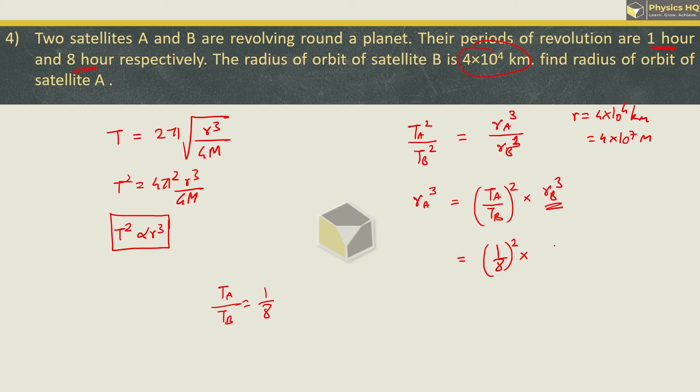Let us put it over here into radius of B is given as 4 into 10^4 km. So this becomes (1/8)^2 into (4 into 10^4)^3. Now 8 squared is 64 and 4 cubed is also 64 into 10^12, giving us 10^7 meter for radius of satellite A cubed. So we will get the radius as 10^7 meter, or you can write radius for satellite A is 10^4 km. Hope you all understood this.